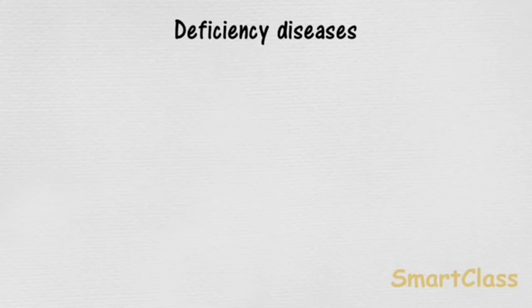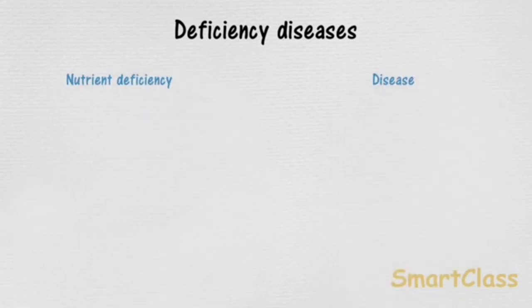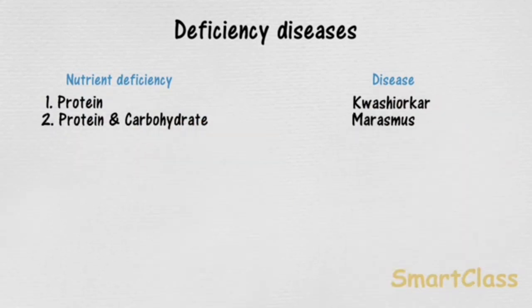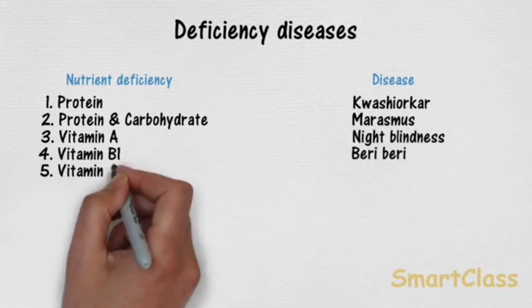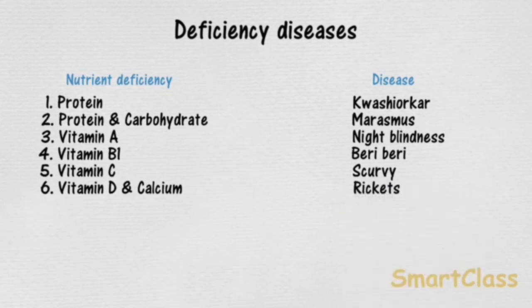Then deficiency diseases. Diseases that occur due to lack of nutrients over a long period of time are called deficiency diseases. We can prevent these deficiency diseases by using a balanced diet. This concludes our second chapter. Thank you so much for watching this video. Stay home, stay safe.